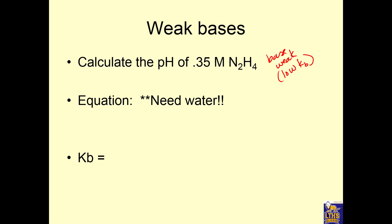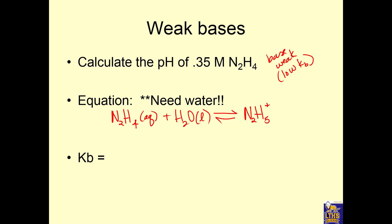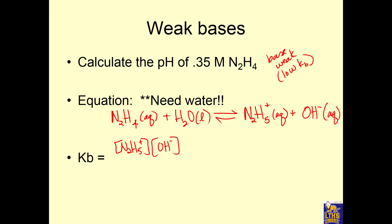We need an equation. For bases, you need to show water. N₂H₄ plus water — it's a base, so it takes on an H⁺, becoming N₂H₅⁺, and the water turns into hydroxide because it gave away H⁺. Now we can write a Kb: N₂H₅⁺ times OH⁻ over N₂H₄ — we don't include water because it's liquid. From the table, Kb is 1.7 times 10 to the negative 6.